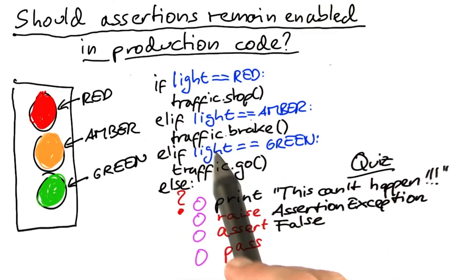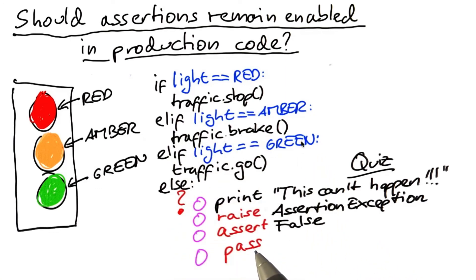Or, last option, we write down pass, which is a Python statement which does nothing at all. After all, this bug in the traffic light may well eventually go away at the next cycle when we actually go back into some defined state.